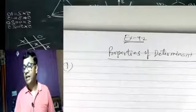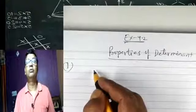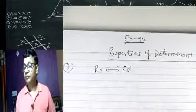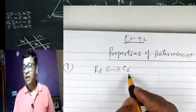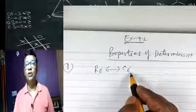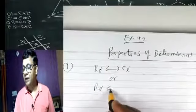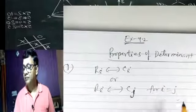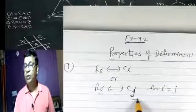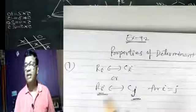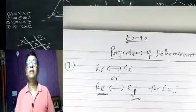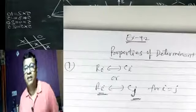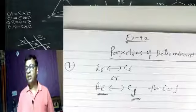Property number one: maine aapko notation mein likhta hoon — ki agar row ko column se interchange karoge, for example if we write i and j (aij or aji), meaning here row 1 becomes column 1, row 2 becomes column 2, row 3 becomes column 3 — so row is column. If we go row interchange, the value of determinant is not affected.